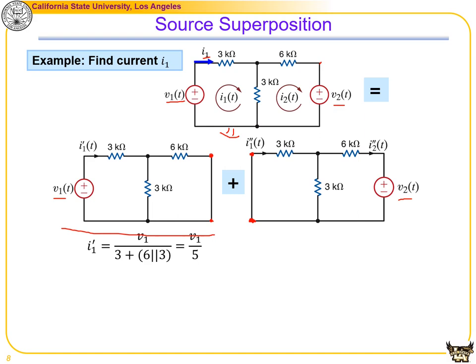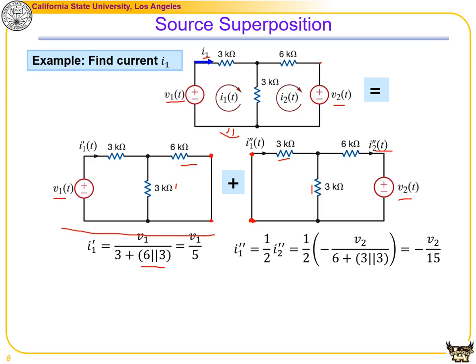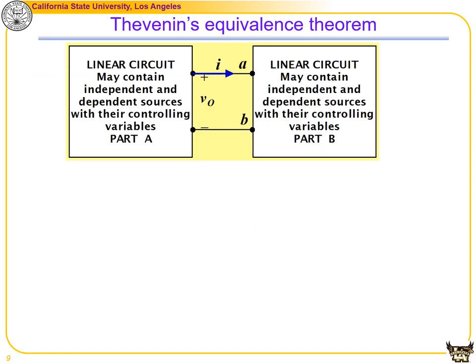Solve i1' from the first circuit: the overall current equals the voltage source divided by the overall resistance — a 3 in series with a parallel combination of 6 and 3. In the second circuit, i1'' is half of i2'' because there is a 3k and 3k in parallel. i2'' is calculated similarly as V2 over the total resistance (6 plus the parallel of 3 and 3). Note the negative sign because i2'' does not follow the passive sign convention. Finally, i1 = i1' + i1''.